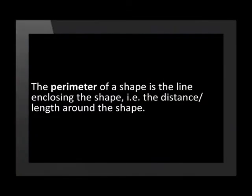The perimeter of a shape is the line enclosing the shape, that is the distance or length around the shape. The perimeter is measured in millimeters, centimeters, meters or kilometers.